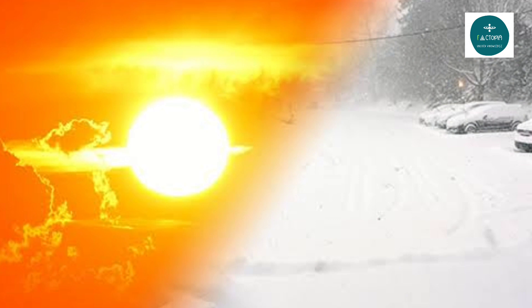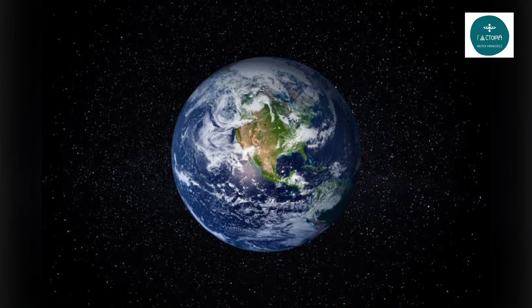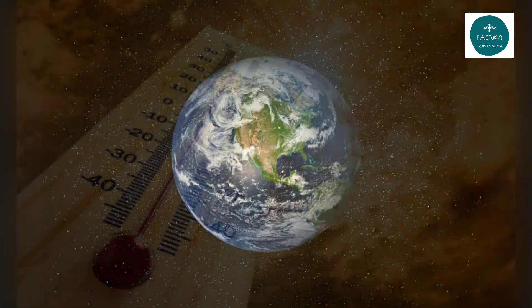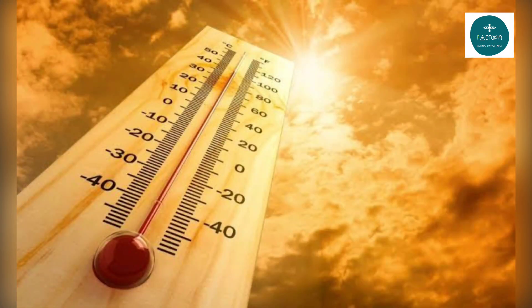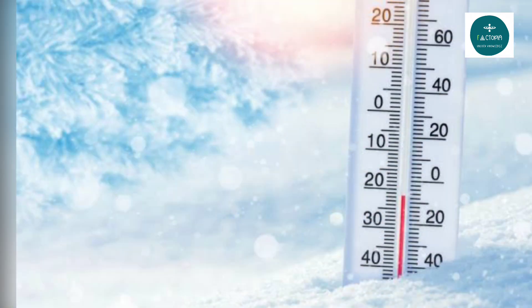Temperature extremes. Without the rotation of the Earth, there would be extreme temperature variations. The side facing the Sun would experience scorching heat, potentially reaching temperatures high enough to melt rocks, while the dark side would plunge into extreme cold.